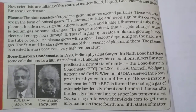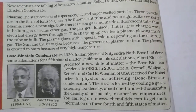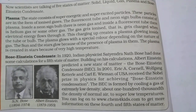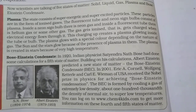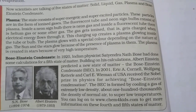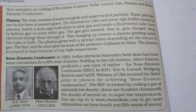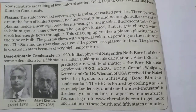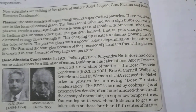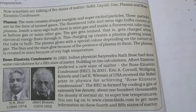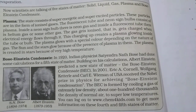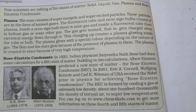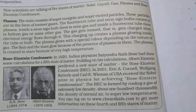Inside a star, the temperature is so high that atoms break apart. These atoms combine with electrons, producing charged particles called ions. So inside the star, there is a mixture of free electrons and ions, and that is known as plasma.